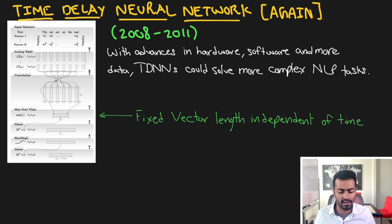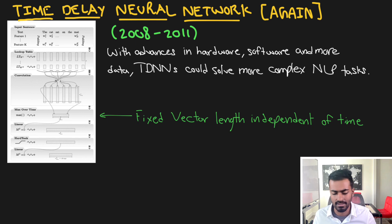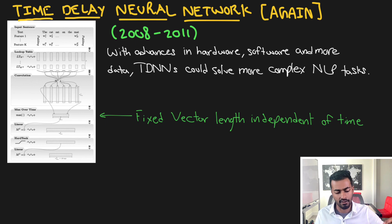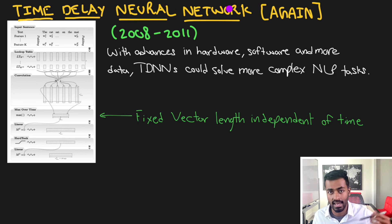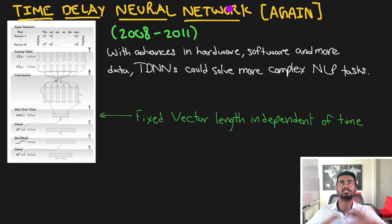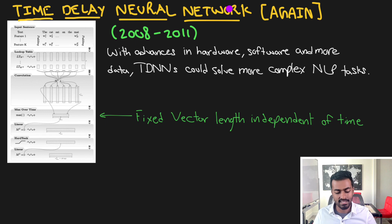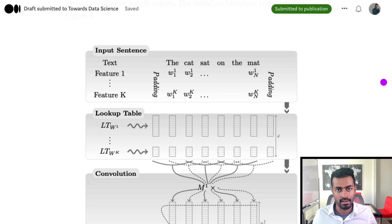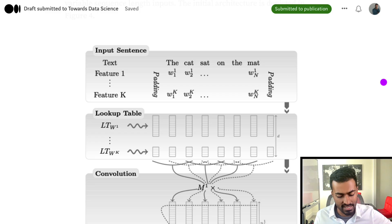With the accompanying software changes, the hardware changes, and also the availability of more and more data, between 2008 and 2011 we saw the renaissance of time delay neural networks once again — but this time using much more complicated NLP tasks.